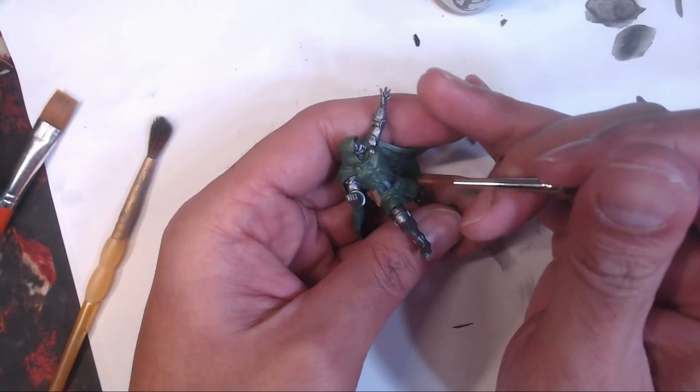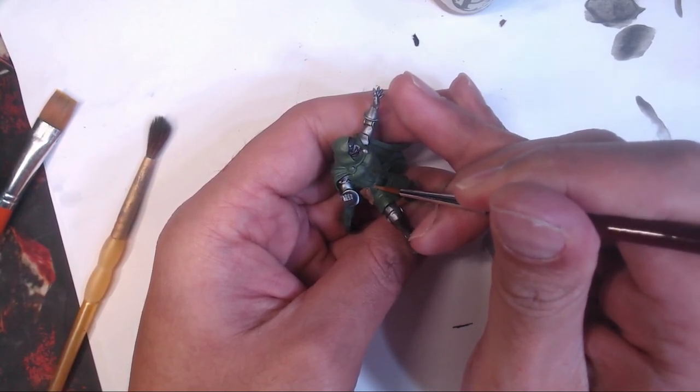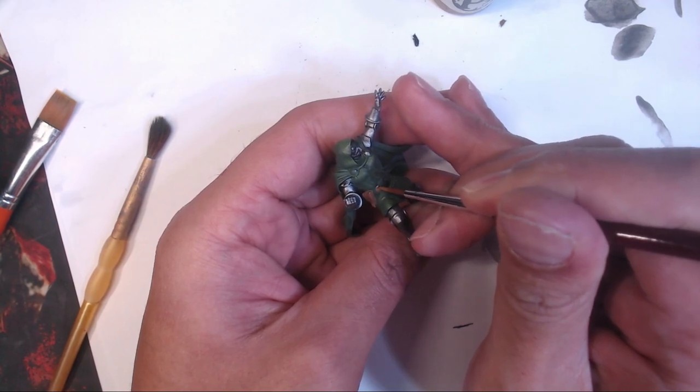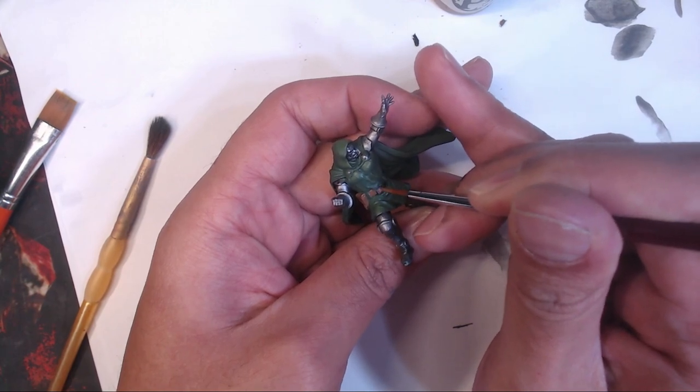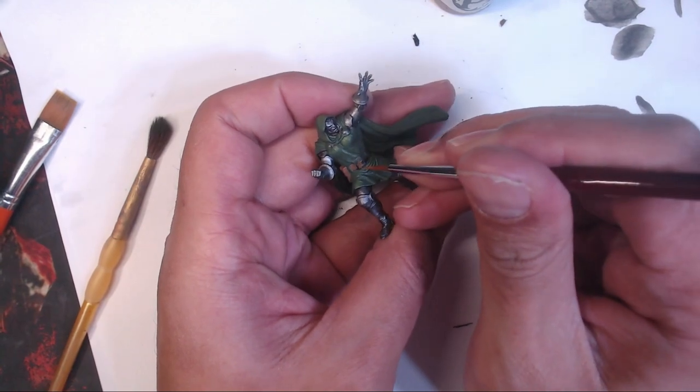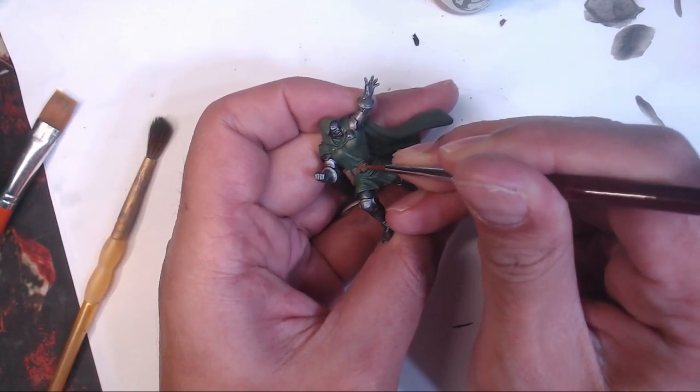Closing in on the finish line, I grabbed my bootstrap brown to paint his belt. Not much to say here, other than stay focused so that you can paint clean. Spending a minute of time to not mess up your previous steps is a good time investment. There is a saying that goes, slow is smooth, and smooth is fast. In essence, there's no bigger time save than doing it right the first time.